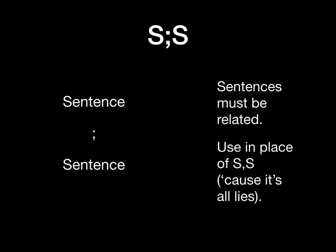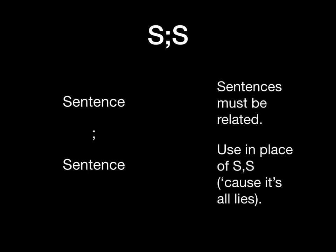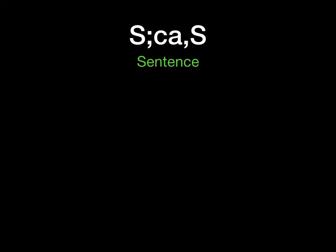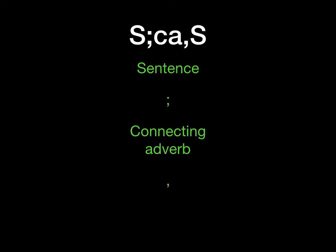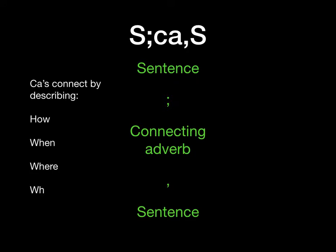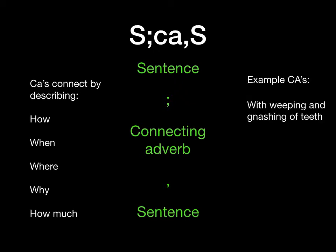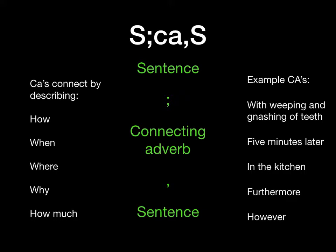You're going to use this in place of S, comma, S, because that's not a sentence pattern at all. Every once in a while, you want to get jiggy with it and add a connecting adverb so that you have S semicolon CA comma S. That's a sentence, a semicolon, your connecting adverb, another comma, and your sentence. Those connecting adverbs can connect sentences by describing either how, when, where, why, or how much those sentences are related. A few example CAs: with weeping and gnashing of teeth, five minutes later, in the kitchen, furthermore, or however.